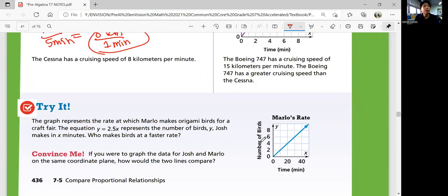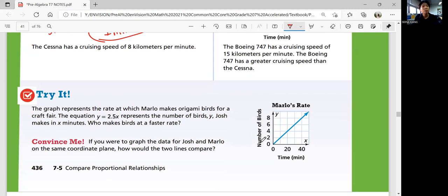So let's look at try number one. The graph represents the rate at which Mario makes origami birds for a crab bear. The equation y equals 2.5x represents the number of birds y Josh makes in x minutes. Who makes birds at a faster rate?